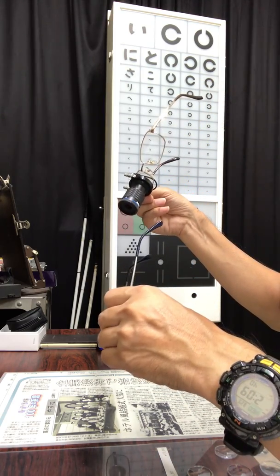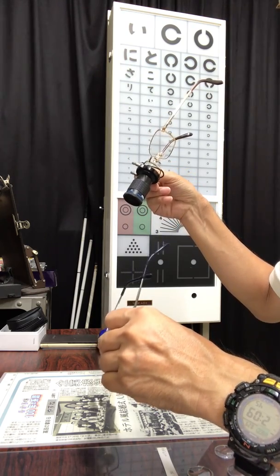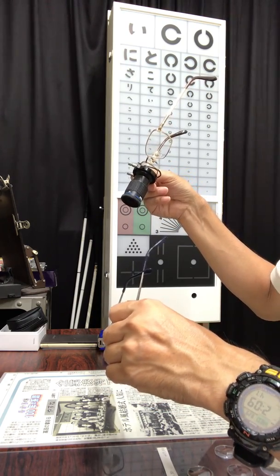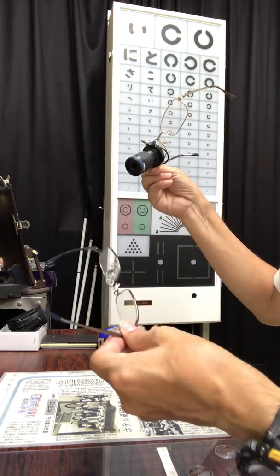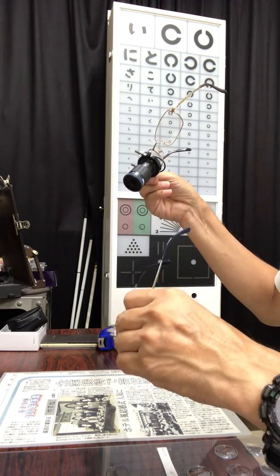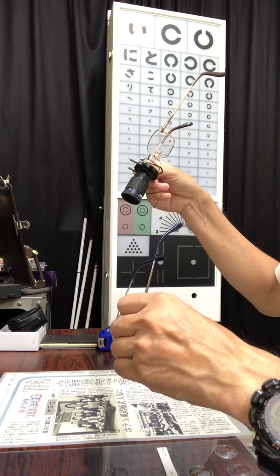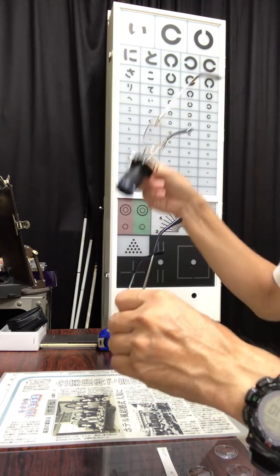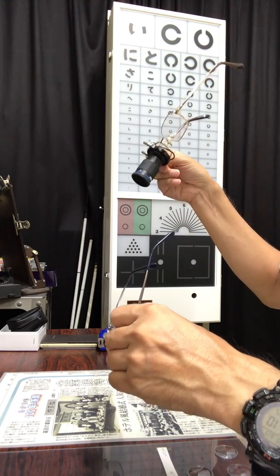The diopters of these two eyeglasses are the same. 16 diopters. As a matter of fact, this is 17 diopters, but almost the same. So, you can see the same image from these gadgets, but different working distances.